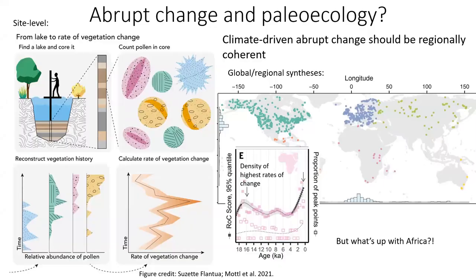There are a lot of examples of abrupt ecological change in the Quaternary record, mostly from individual sites with pollen records. But one issue in understanding the connection between climate as a driver of abrupt change and an individual site is that local controls can also influence the pace of ecosystem change — it's difficult to disentangle those two. One way we can address this is by moving from the site level to global or regional syntheses in order to look for synchronous patterns of abrupt change that are more likely to be related to broad-scale climate.